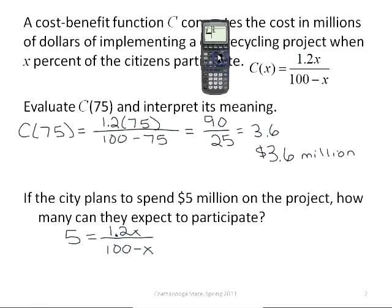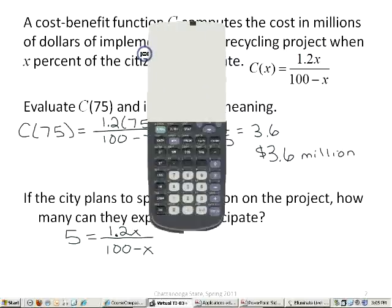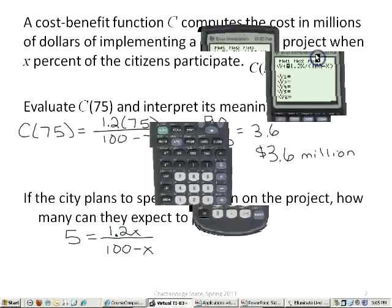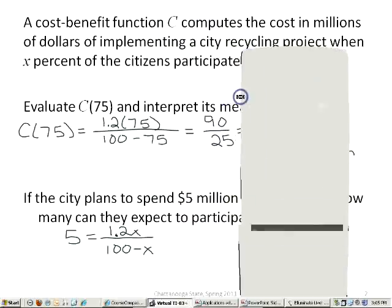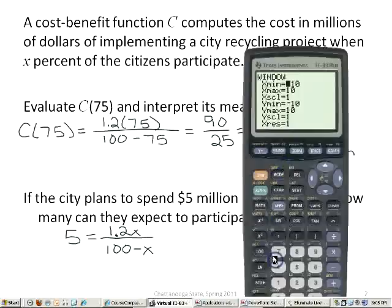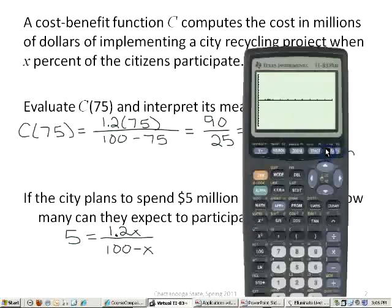And you could solve this by hand, or you could solve it graphically. I've already got the function in my calculator. Let me go to my Y equals screen now, and go to Y2, and just put in a value of 5, because I want to know when the cost is 5. Now I'm going to have to adjust my window here, because remember my x values are the percentages of people that participate. So the only numbers the x could be are from 0 to 100. So I'm going to let each tick mark there be 10 units.